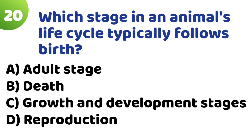Question 20: Which stage in an animal's life cycle typically follows birth? Option A: Adult stage. Option B: Death. Option C: Growth and development stage. Option D: Reproduction. The correct answer is Option C — Growth and development stage.